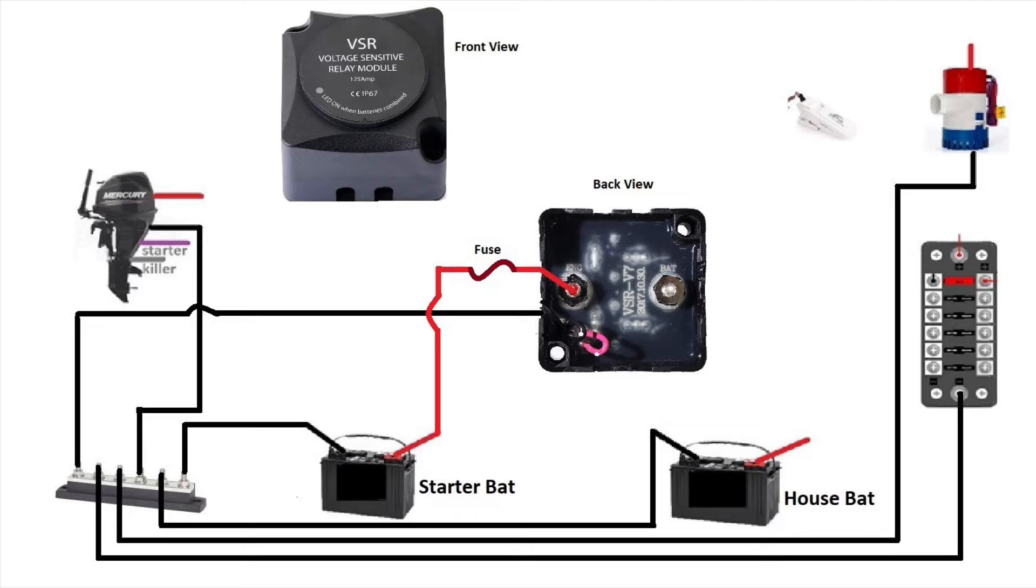All right, we're going to start connecting the VSR. We're going to take the positive of the starter battery and connect it to the ENG prong with the red dot on it of the VSR. We're going to add the fuse to protect our VSR.